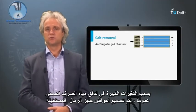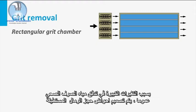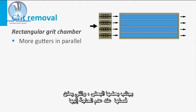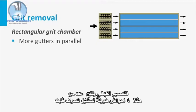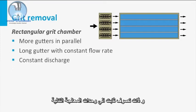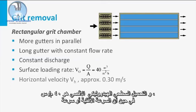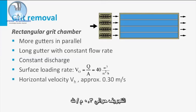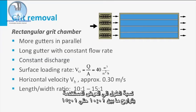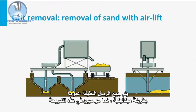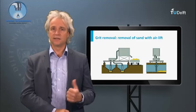Owing to the high variations in sewage flow, generally various rectangular grit chambers are designed next to each other, which can be disconnected when not needed. The final design results in a number of, for instance, 4 long gutters receiving a constant flow rate and having a constant discharge to the next process units. The maximum hydraulic surface load is 40 meters per hour, whereas the horizontal scouring velocity is approximately 0.3 meters per second. The generally applied length-to-width ratio ranges between 10:1 and 15:1. The clean sand is generally collected in a mechanized way, as indicated in this slide.